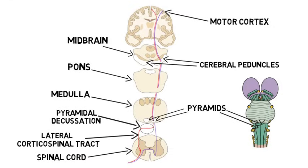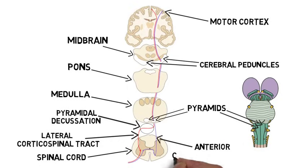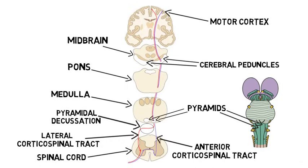The other 10% of the fibers continue into the spinal cord on the same side of the body where they originated, as part of the ventral or anterior corticospinal tract, and only cross over when they reach the level of the spinal cord where they will synapse on a lower motor neuron.